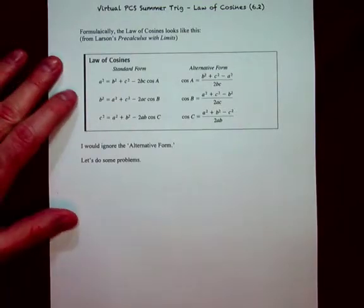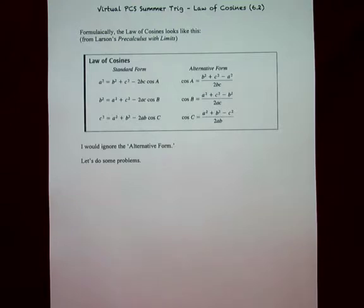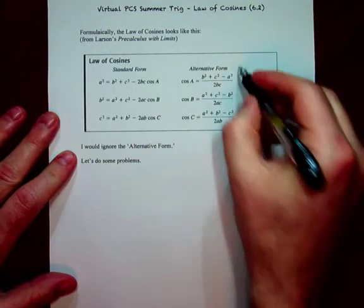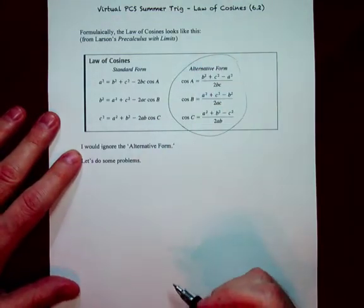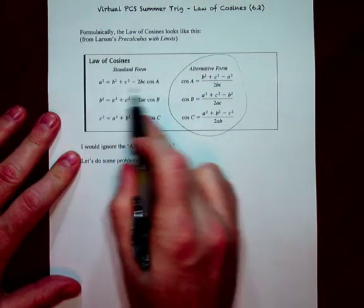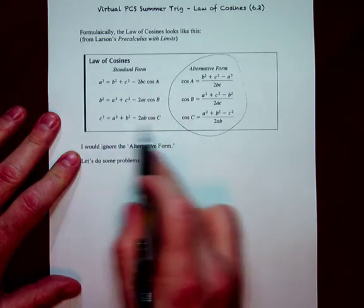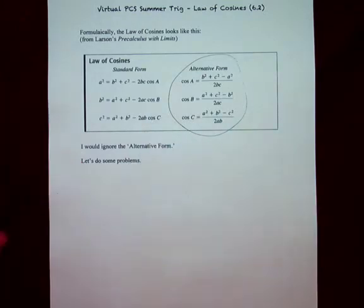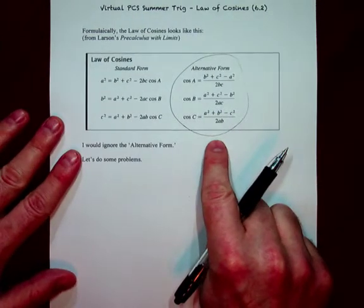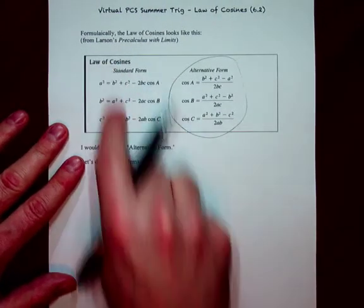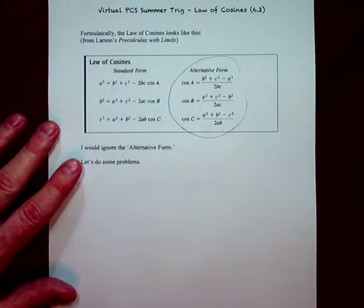Now, this is what comes from Ron Larson's pre-calculus textbook. I sort of just screenshot it so I could plop it in here. These are the alternative forms, and they amount to nothing more than basically taking this one and solving for cosine A, taking this one and solving for cosine B, taking this one and solving for cosine C. Well, you ought to be able to add and subtract and divide and solve for an expression or a variable that is embedded within a larger equation. That should not be difficult. What's more difficult than that is memorizing a second form of all three of these. So I would just go ahead and just concentrate on that.